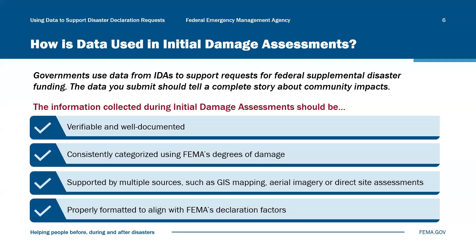Lastly, the information has to be properly formatted to align with FEMA's declaration factors. FEMA provides templates, checklists, and tools that can help collect and share data with the federal government. After the initial damage assessments are complete, they are sent to state, tribal nation, and/or territorial officials for review. If the disaster is beyond the capacity of the impacted jurisdiction, state, tribal nation, and/or territorial officials may submit a request for a joint preliminary damage assessment to their regional FEMA office.